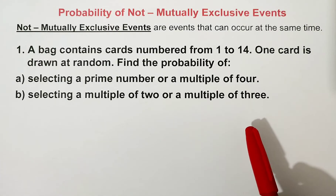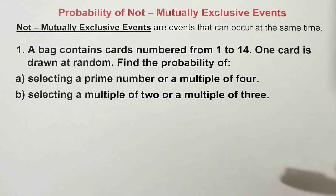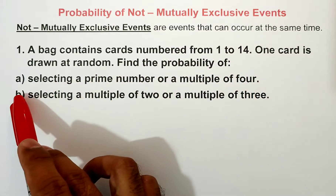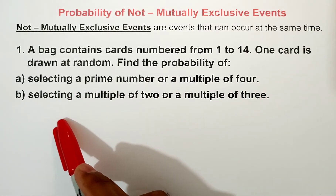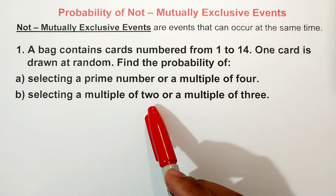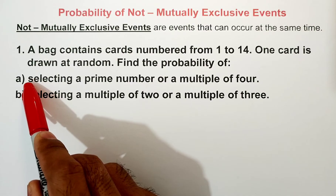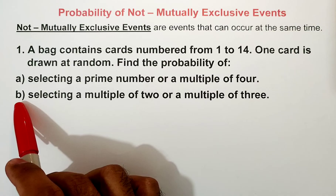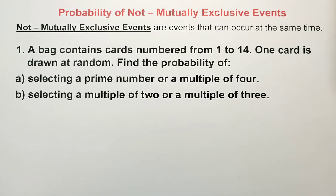Let us have example number one. A bag contains cards numbered from 1 to 14. One card is drawn at random. Find the probability of A, selecting a prime number or a multiple of 4, and B, selecting a multiple of 2 or a multiple of 3. Let's see if letter A and letter B are mutually exclusive or not mutually exclusive events.